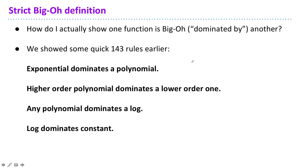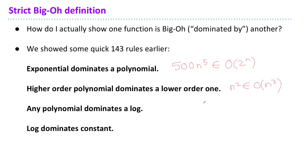The first rule is that exponential dominates a polynomial, so 500n⁵ is in big O of 2ⁿ. A higher order polynomial dominates a lower order one, so n² is in big O of n³. Any polynomial dominates a log, so 42 log n is in big O of n. And log dominates a constant, so 750,000 is in big O of log n.